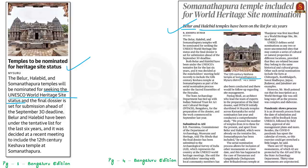Apart from the two Hindu temples, the Halebidu temple complex also has two Jain Basadis (Jain temples). The Somanathapura Chennakeshava temple lies in Mysore district of Karnataka and was built by Hoysala commander Somnath in 1268 AD. All three temples are finest examples of Hoysala architecture.